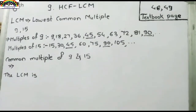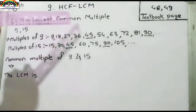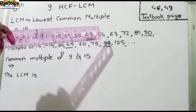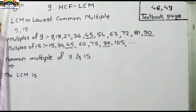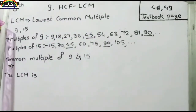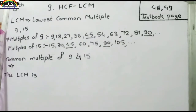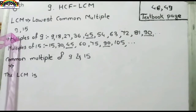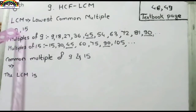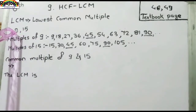Next and last topic is LCM — Lowest Common Multiple. It means the lowest common value among the common multiples. So let's look at the example of 9 and 15 to find their LCM.